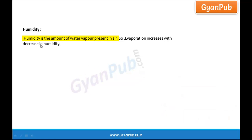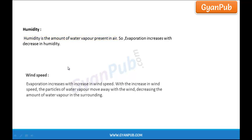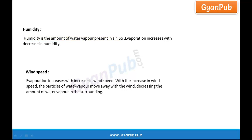Coming to wind speed — evaporation increases with increased wind speed. With increasing wind speed, the particles of water vapor move away with the wind, decreasing the amount of water vapor in the surrounding. By decreasing the amount of water vapor, humidity decreases, and by decreasing the humidity, evaporation increases.